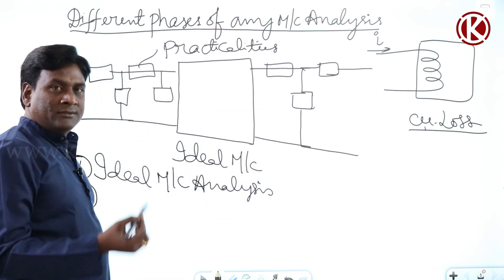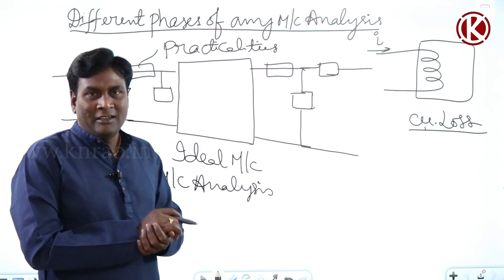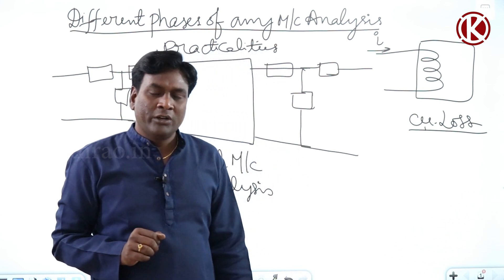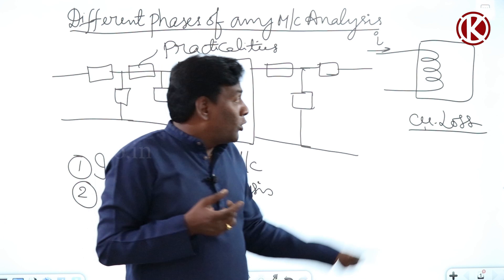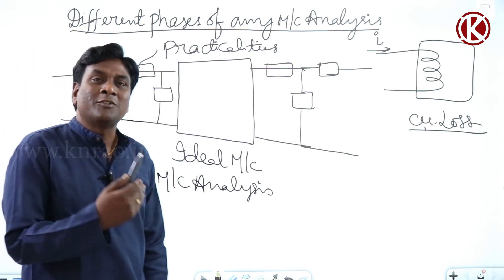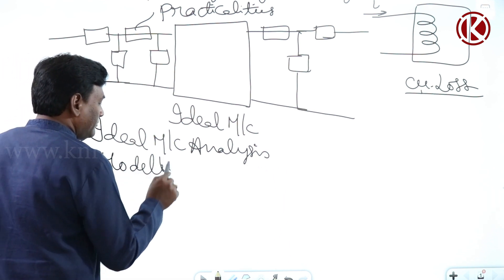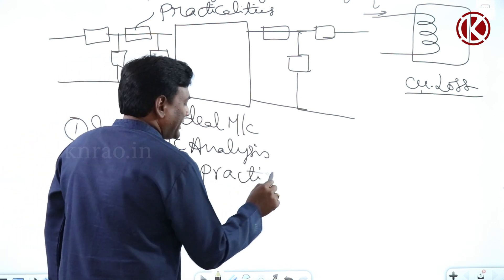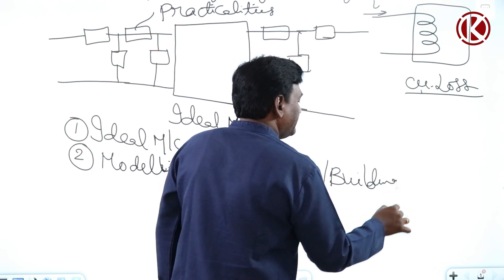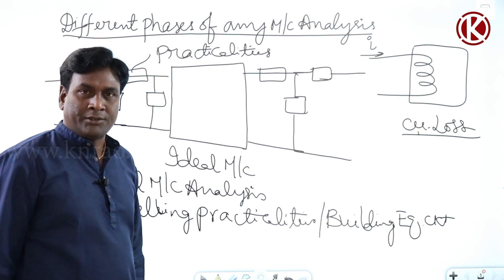In the ideal machine — phase one — we are not considering any practicalities. In phase two, we model those practicalities. For example, hysteresis loss exists in a practical transformer, so we model some resistance somewhere to represent it. Phase two is modeling practicalities, or equivalently, building the equivalent circuit.